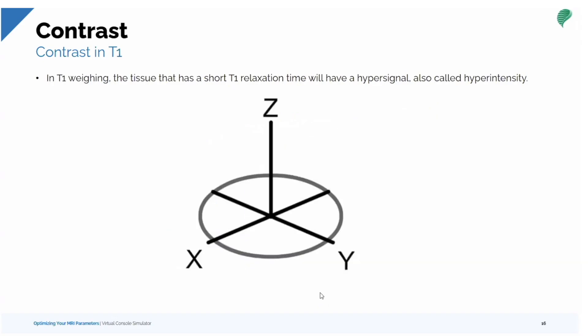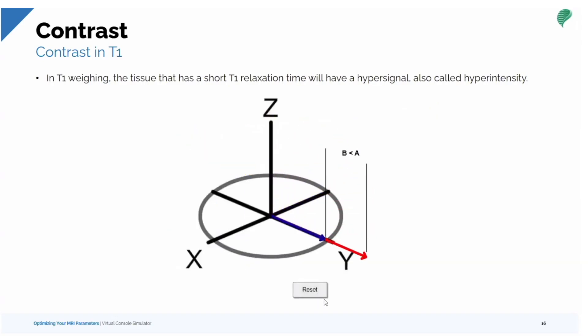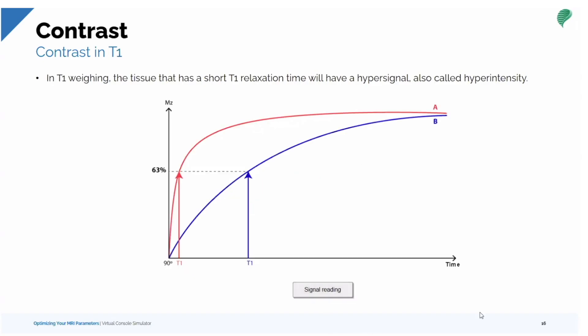When the signal is red, there's a differentiation — tissue B is actually less than tissue A in signal, reflecting their different T1 relaxation times.